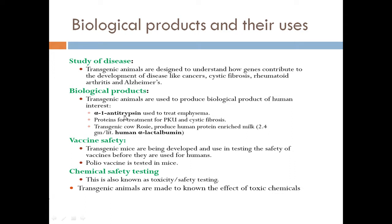By extracting the milk, which contains antitrypsin, it can be used as a medicine to treat emphysema. Likewise, it is also used to treat phenylketonuria and cystic fibrosis — both are disorders. Many biological products may be used to cure diseases and act as therapeutic products. The third use is vaccine safety: before a newly produced vaccine is injected into human beings, lab trials must be carried out on transgenic animals, mostly mice, rabbits, and ducks, to find out the side effects. The fourth use is chemical safety testing, where toxicity is also measured using cell lines.